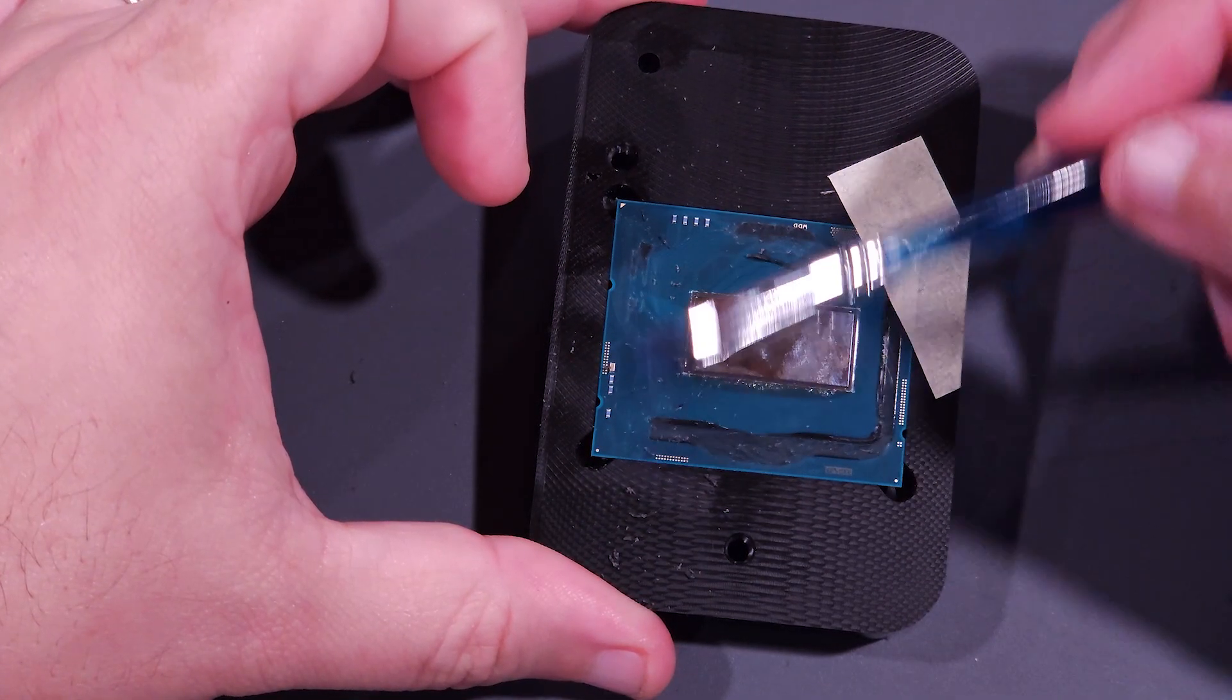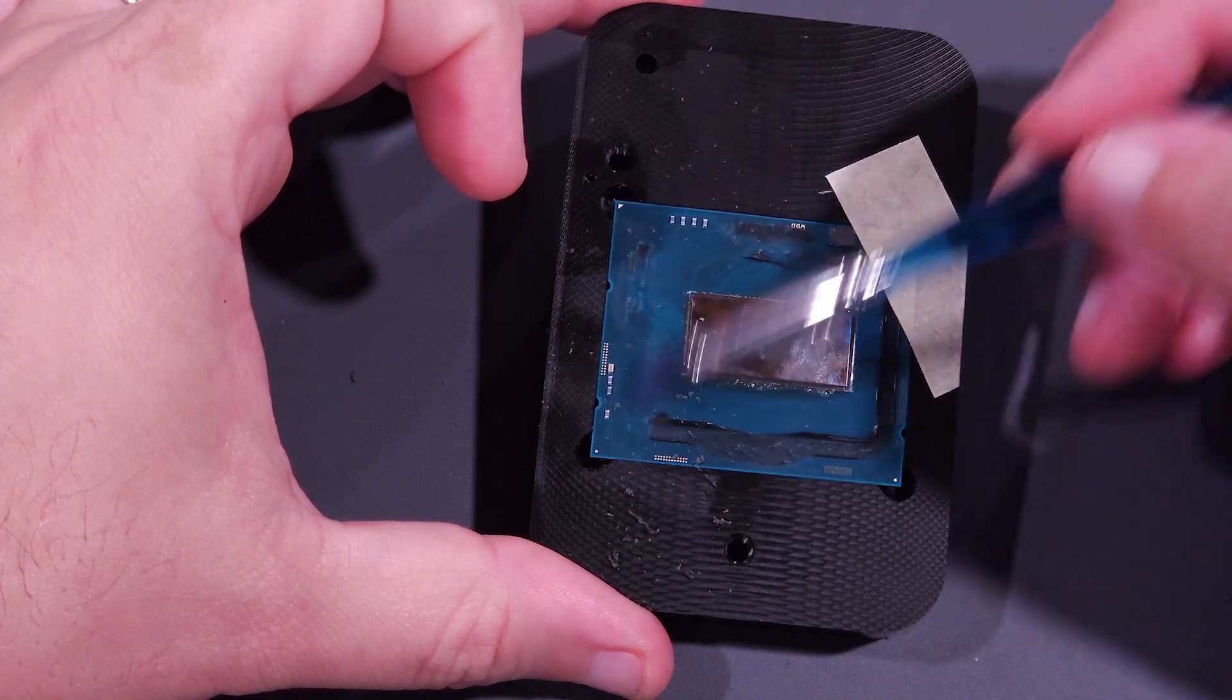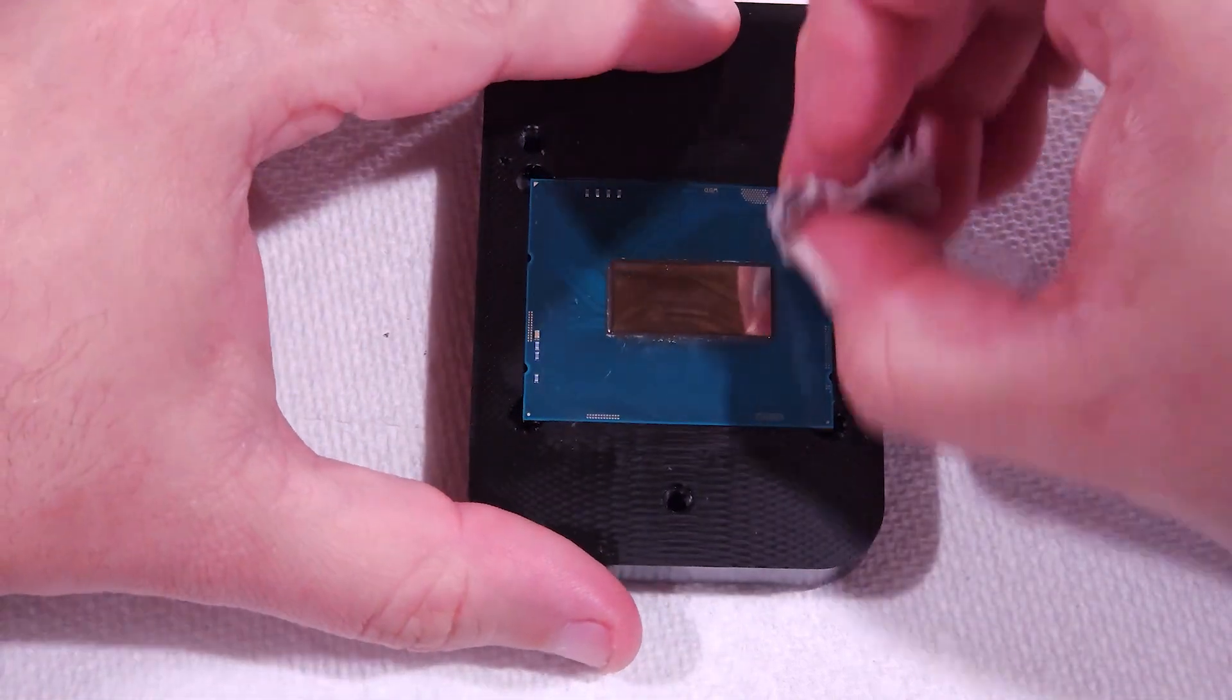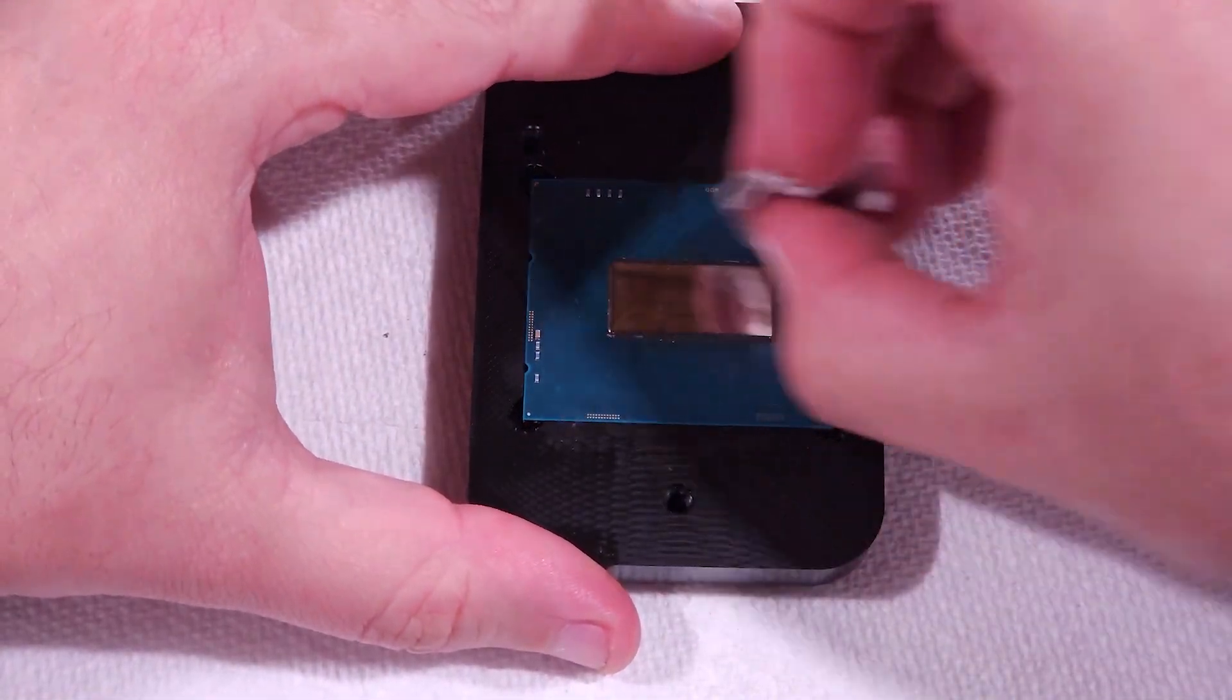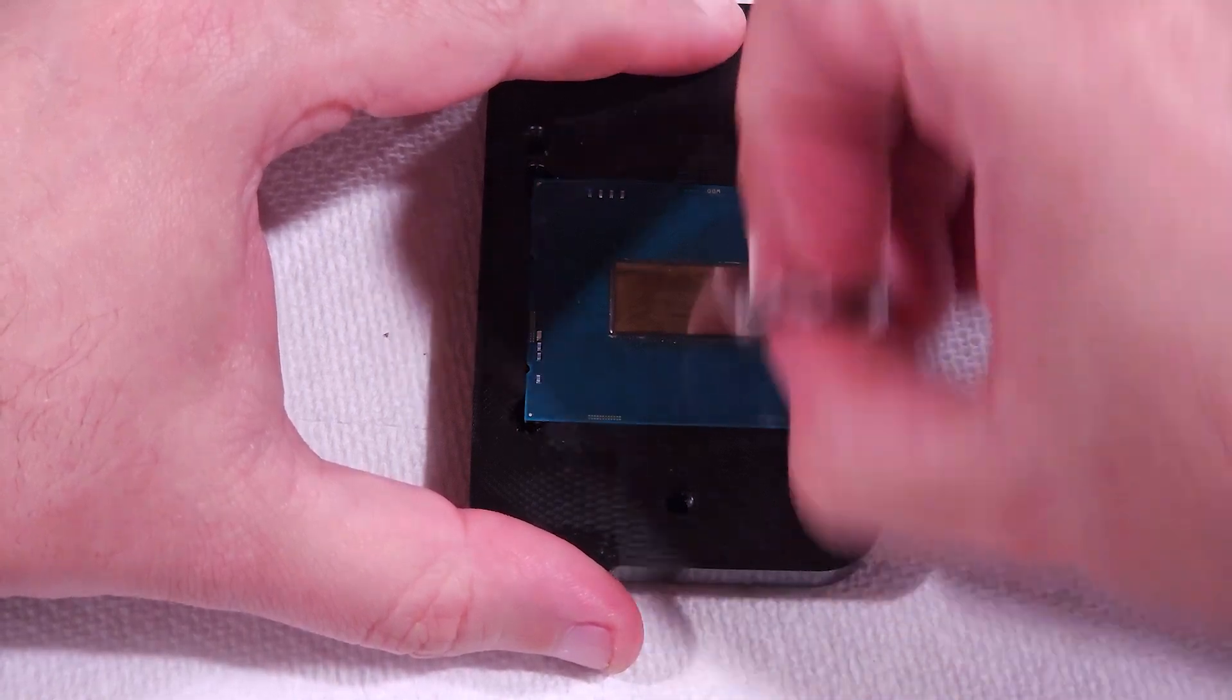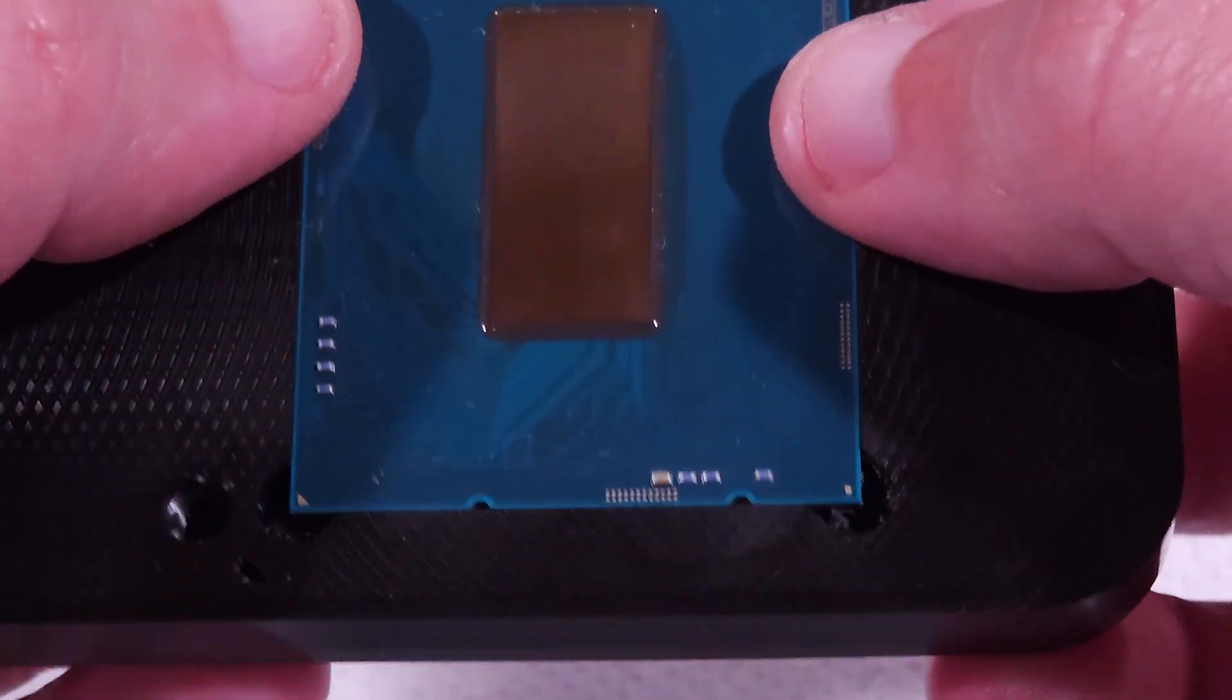As needed, I'll use a soft-bristled watercolor paintbrush to gently broom the glue bits off the surface. Once all the glue has been removed, it's time to hit everything with alcohol and q-tips. If I find an area that I missed, I'll clean it up now. It's very important with direct die cooling to remove as much of this material as possible and here's what the CPU looks like after cleaning.